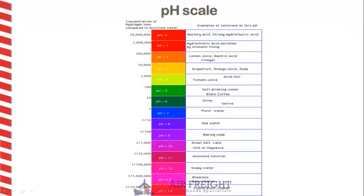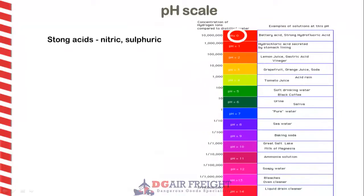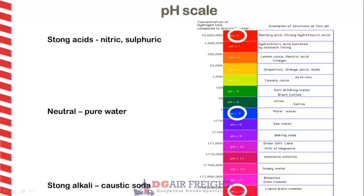The strength of an acid or alkali is measured by its pH scale, or potential of hydrogen. A pH of 0 indicates a strong acid like nitric acid and sulfuric acid. A pH of 14 indicates a strong alkali like sodium hydroxide, also known as caustic soda. A pH of 7 is neutral, or pure water.